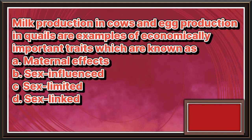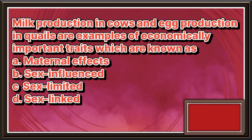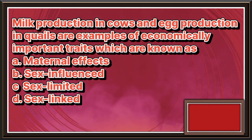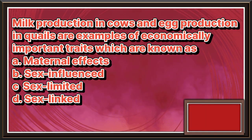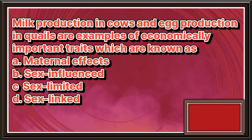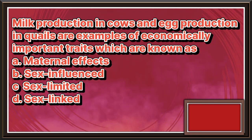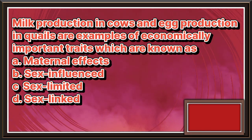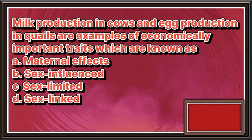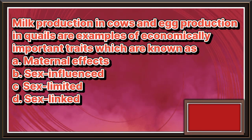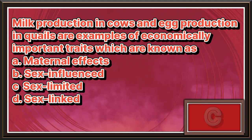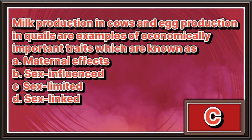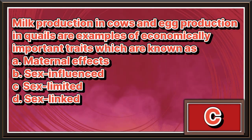Milk production in cows and egg production in quails are examples of economically important traits, which are known as. a. Maternal effects. b. Sex influenced. c. Sex limited. d. Sex linked. The answer is letter c.